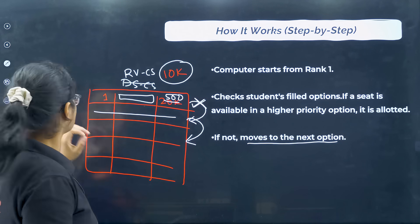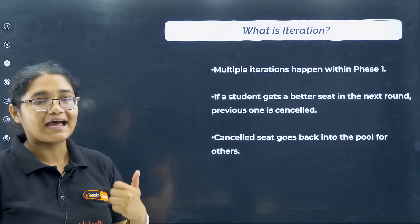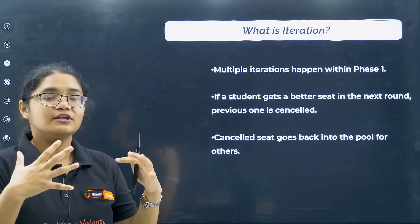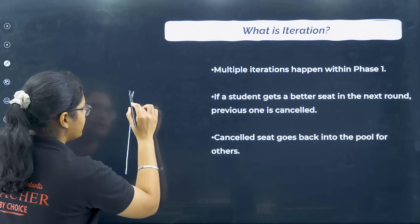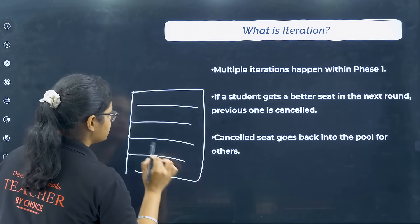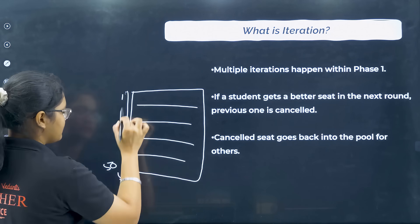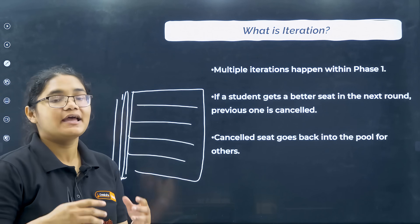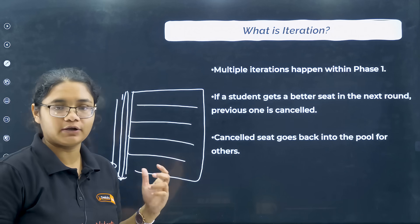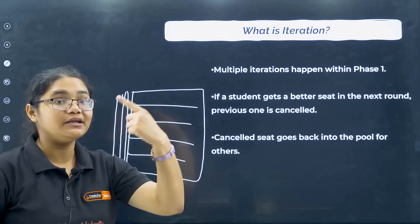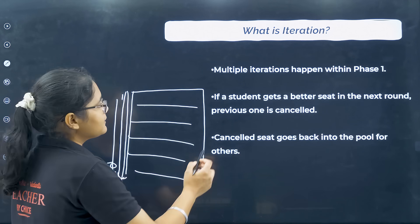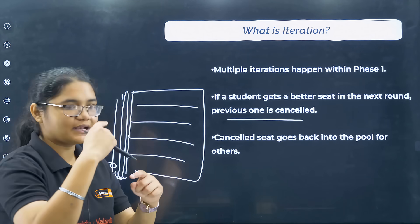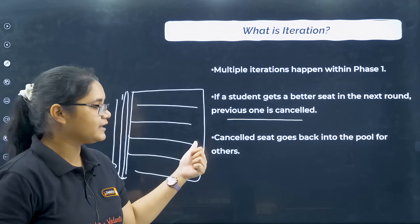Now, what is iteration? Each round has three phases and each phase has a number of iterations. This means the computer will go through your entire list — say, 50 options — many times. This checking of your options happens multiple times, and if anywhere a seat is available it will be allotted. If a student gets a better seat in the next iteration, the previous one is cancelled.